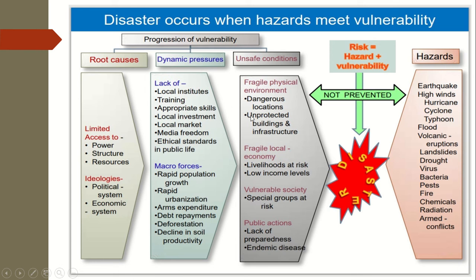If not managed properly, hazards such as earthquakes, high winds, hurricanes, cyclones, typhoons, floods, volcanic eruptions, landslides, drought, viruses, bacteria, pests, fire, chemicals, radiation, and armed conflicts cannot be prevented and will lead to disaster — that is, loss of life, property, and effect on the environment.